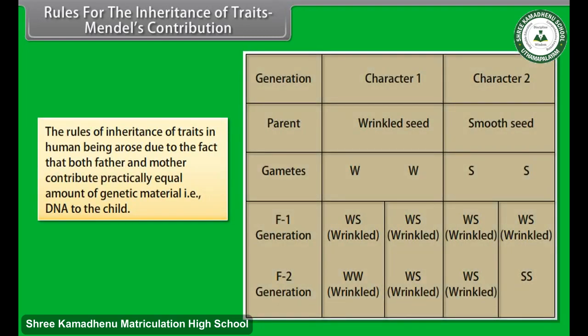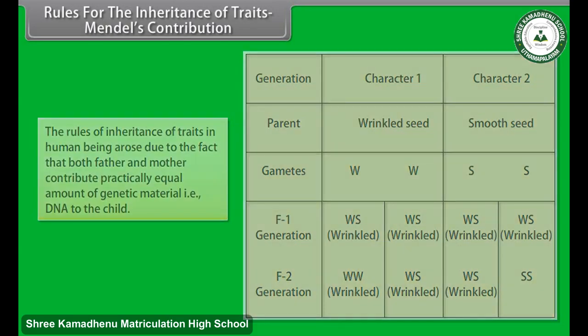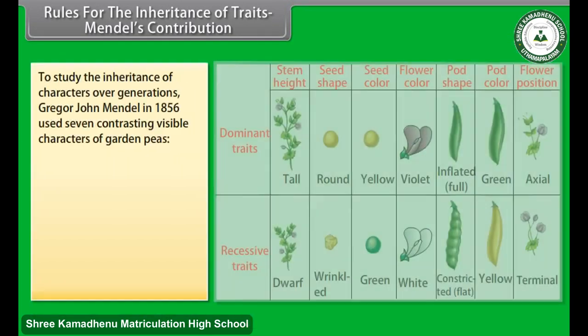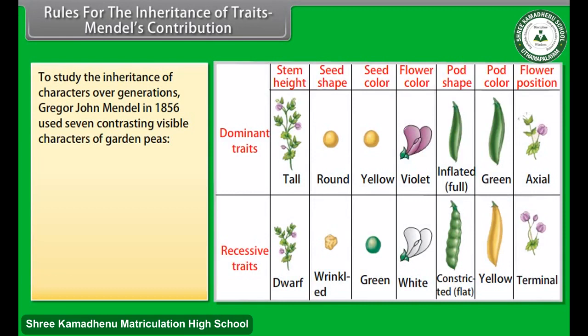Rules for the inheritance of traits — Mendel's contribution: The rules of inheritance of traits in human beings arose due to the fact that both father and mother contribute practically equal amounts of genetic material, that is DNA, to the child. Thus each trait can be influenced by both paternal and maternal traits.